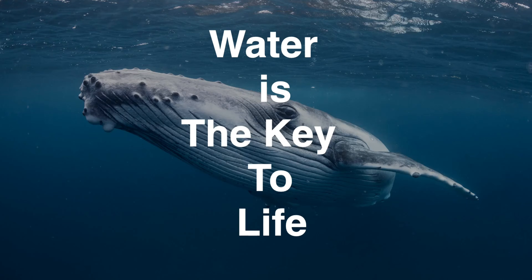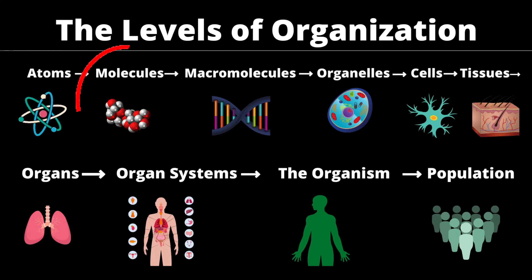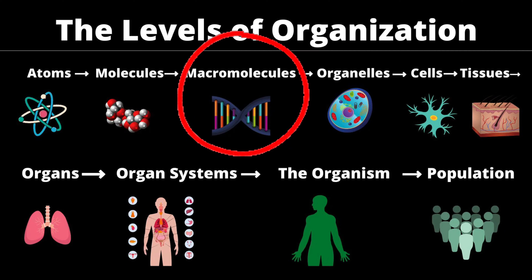Water is the key element to sustaining life on this planet. The human body is made up of about 60% of it and the planet about 71%. The human body is a very complex structure, which is why we use the levels of organization. Starting with the smallest particle — atoms, made up of electrons, protons, and neutrons. These atoms come together to form molecules, and one or more molecules come together to form a macromolecule. Macro just means large.